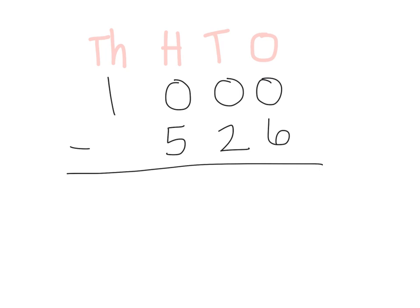Now we're going to start subtracting, and we always start in the ones place. Say the rhyme with me: More on top, no need to stop. More on the floor, go next door, trade 10 more. My next door neighbor has nothing to give. Let's check out my hundreds place — my hundreds neighbor has nothing to give. Let's go to the thousands place. But we still don't have any ten-sticks and we still don't have any ones, so we need to break something up to get more.